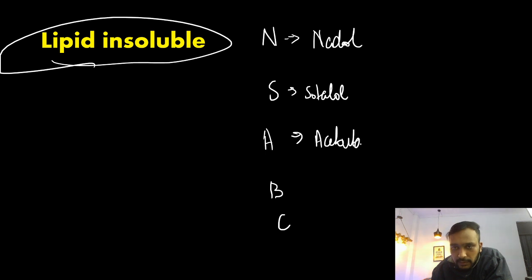Acebutolol, bisoprolol, betaxolol, and finally we have your celiprolol. So these are various mnemonics that you need to know in beta blockers.